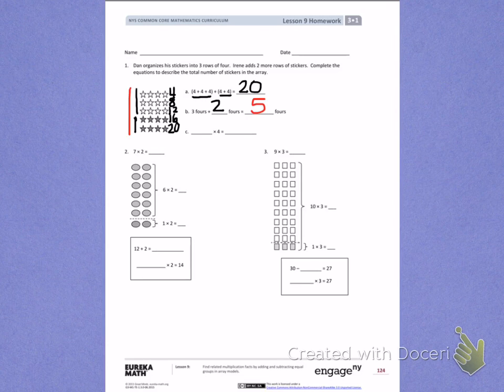Coming to letter C, again, I have 5 rows of 4. And those 5 rows of 4 will give me 20.